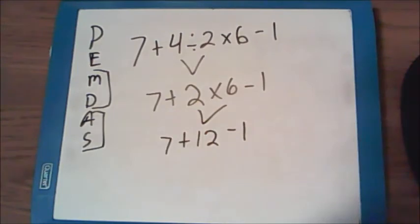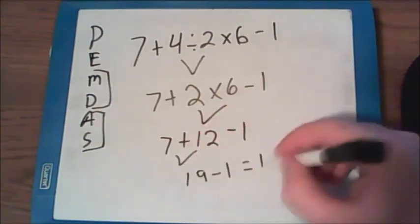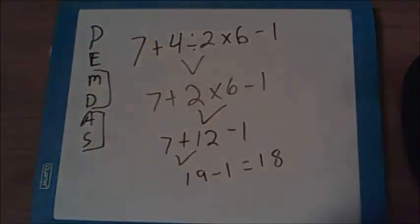Now here I have addition and subtraction. So I'll just work this one out from left to right. 7 plus 12 gets me to 19. And lastly, 19 minus 1 gets me to 18. The correct answer for this question.